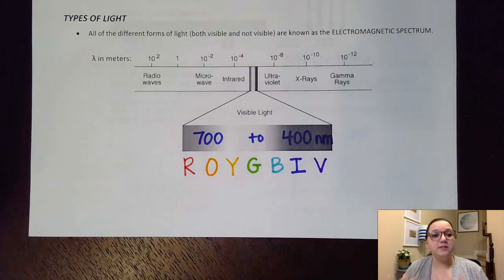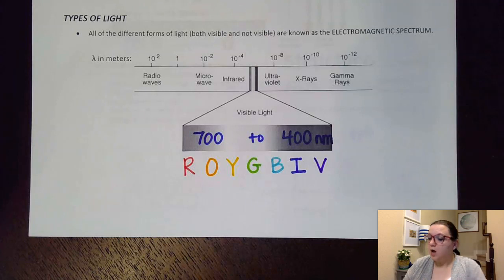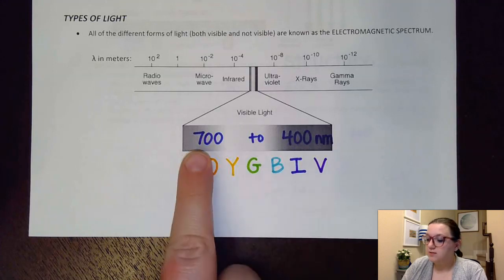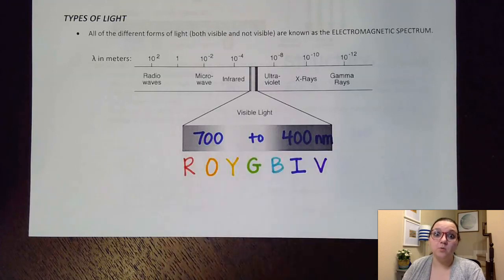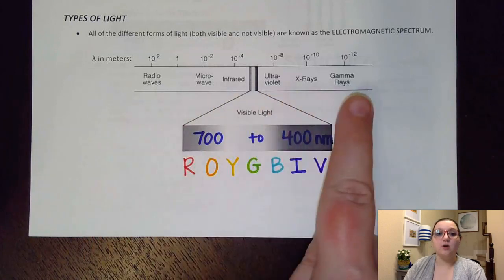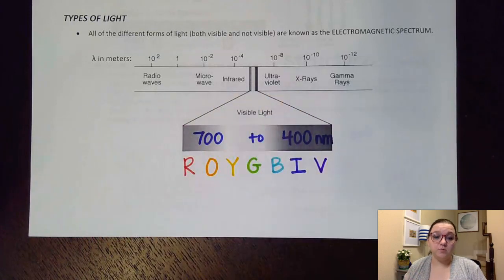This shows us all of our different types of light, both visible and non-visible. Our visible light range is that ROY-GBIV color spectrum that falls in the 700 to 400 nanometer wavelength range. However, our other forms of light here are non-visible forms. We can't pick those up with our human eyes. Our retinas are not capable of sensing those particular wavelengths.